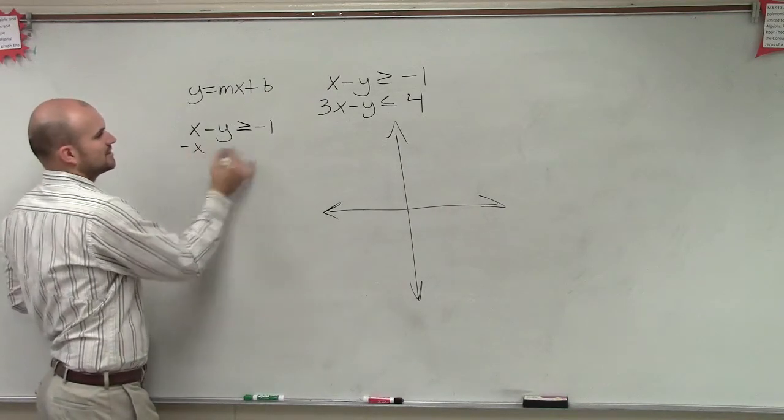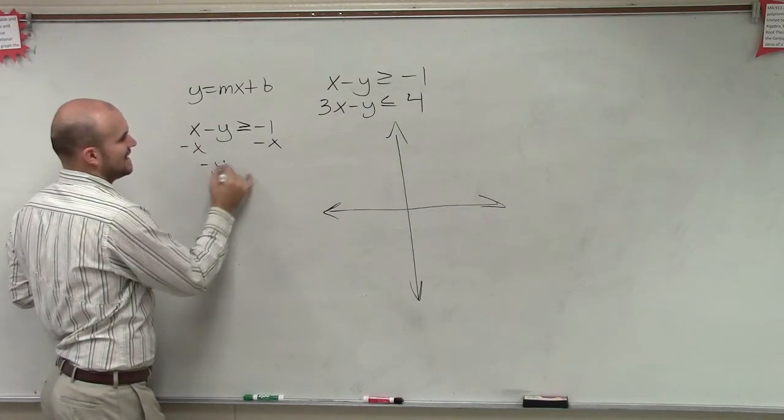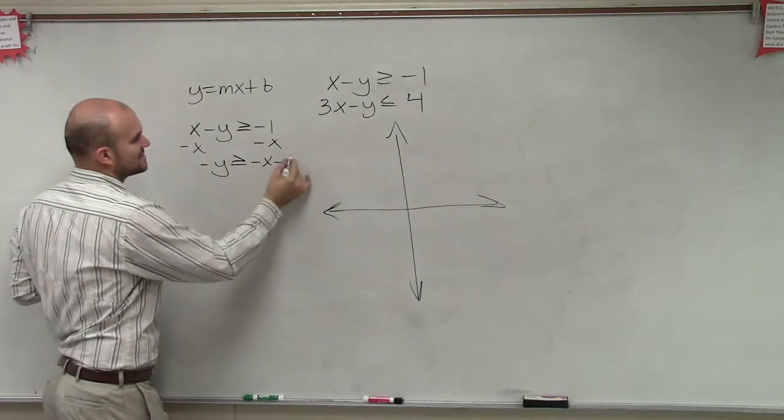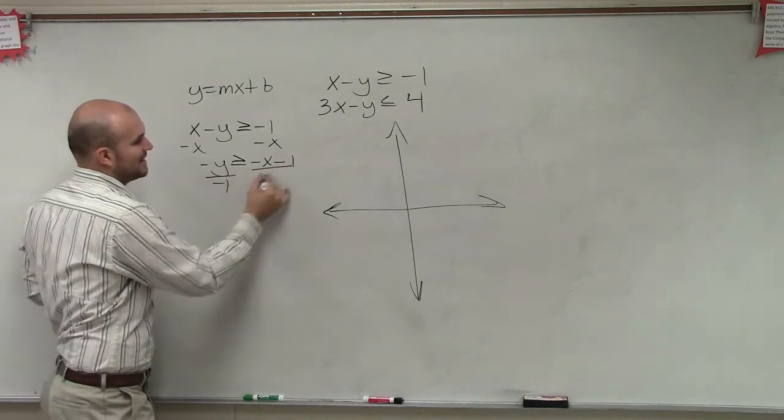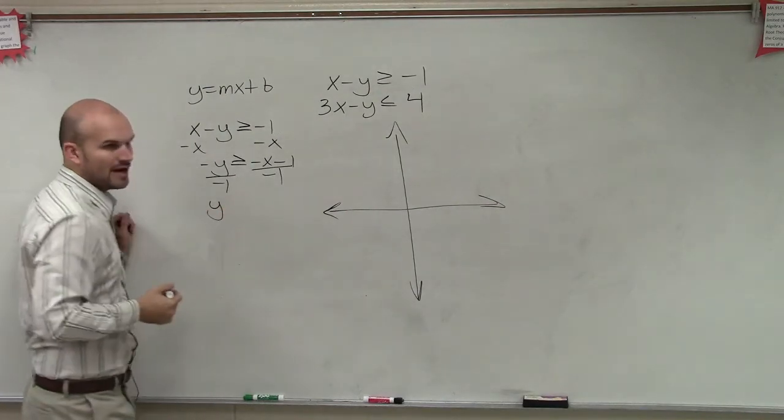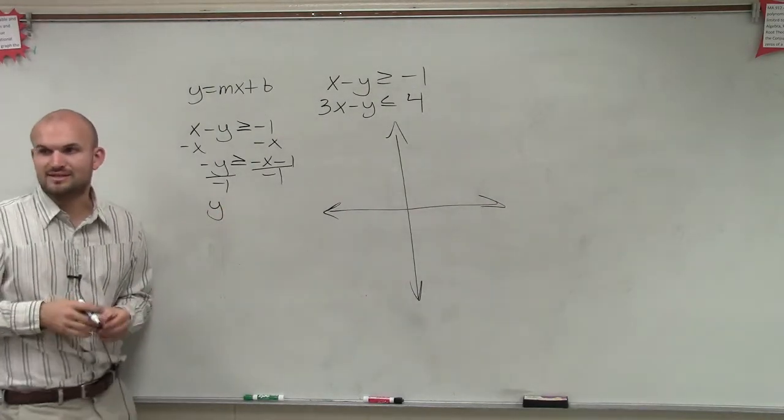So I'm going to solve for y. I'm going to subtract x on both sides, and I get negative y is greater or equal to negative x minus 1. Then to get y by itself, I divide by negative 1. And hopefully, if you guys remember in your review, whenever you divide or multiply by a negative number, you do what with the sign? Flip it, right?